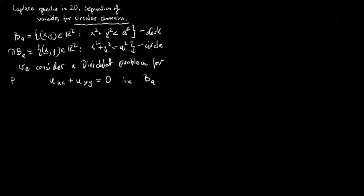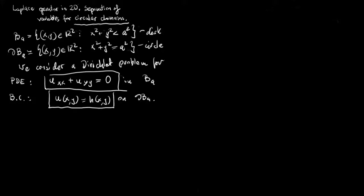This is our PDE, and the boundary condition is as follows: the function U, which is our unknown, should be equal to a given function H on the boundary. Finding U satisfying this is to solve our Dirichlet problem. Since our domain has rotational symmetry, it is very convenient to pass from Cartesian coordinates to polar coordinates.